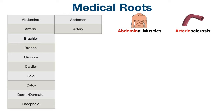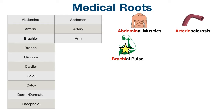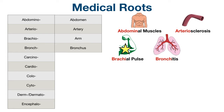The next root is brachio, which means arm. You can think of your brachial pulse, which is the pulse inside your upper arm, as indicated by the star. Next is bronch, which refers to the bronchi of the lungs. You can think of bronchitis, which is inflammation of the bronchi, usually caused by a virus.